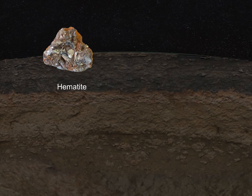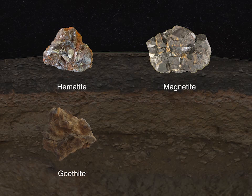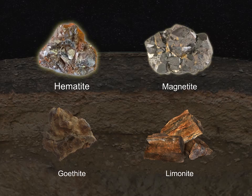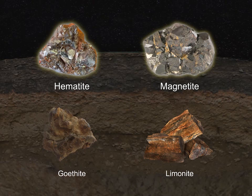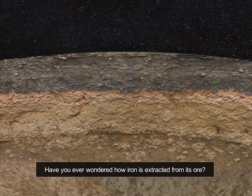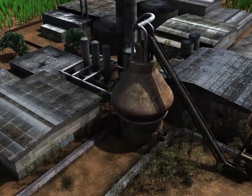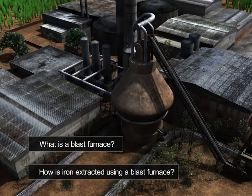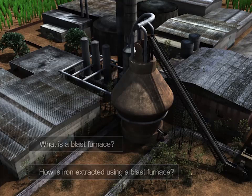These minerals include hematite, magnetite, goethite, limonite, and others. Hematite and magnetite are the main ores of iron. Ores are obtained from the Earth by mining, and iron is extracted from them. Have you ever wondered how iron is extracted from its ores? Iron is extracted from its ores in a blast furnace. Come, let us find out.